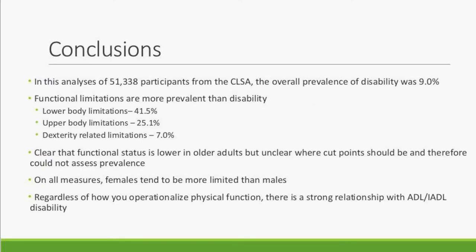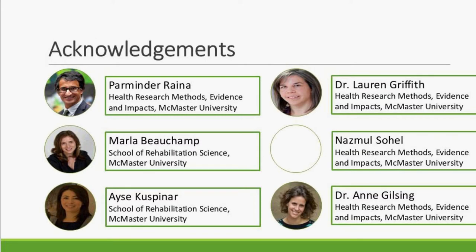In conclusion, in this analysis of over 51,000 CLSA participants, overall prevalence of disability was about 9%, and functional limitations were more prevalent than disability. Lower body limitations were the most prevalent at about 41%, upper body at around 25%, and dexterity limitations impacted only 7% of participants. Functional status is clearly lower in older adults, but appropriate cut points remain unclear. On all measures, females tended to be more limited than males. Regardless of how physical function is operationalized, there is a strong relationship with disability assessed by ADLs. Thank you to my collaborators, without whom this project never would have gotten off the ground.